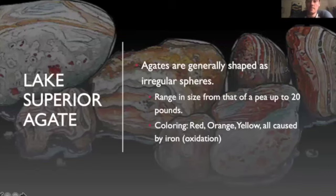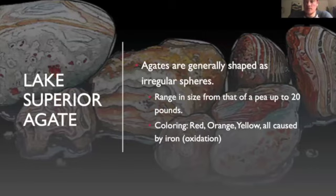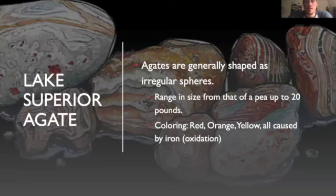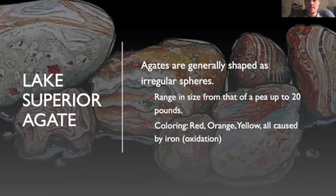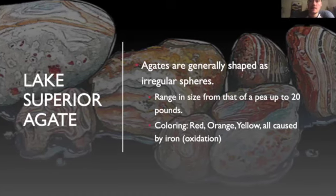Many of you might be familiar with agates. Agates come in lots of different shapes and sizes, and some people like to collect them. Bigger agates can sometimes be of value — they range from the size of a pea, and some of the bigger agates found on Lake Superior shores have been almost 20 pounds. They're usually red, orange, and yellow, and that coloring is caused by a process called oxidation from iron. When iron and water mix, it creates an almost bleeding effect of the iron, which has colored these rocks over thousands of years.